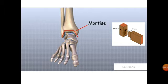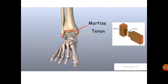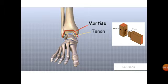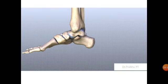The tenon is the end piece that is shaped to fit into the mortise to form a joint. You can see the tenon goes into the mortise and forms the joint — that is the mortise and tenon concept. At the ankle, the tibia and fibula together form the mortise, acting like a socket that receives the talus.